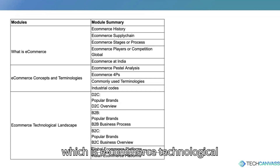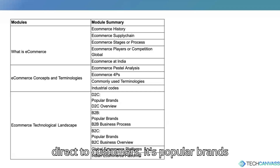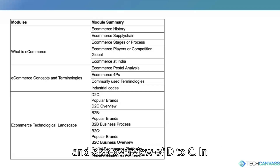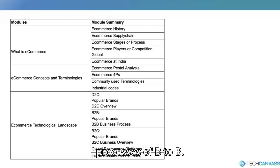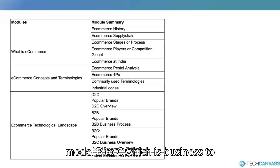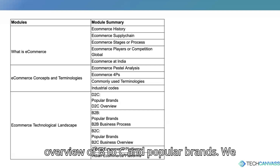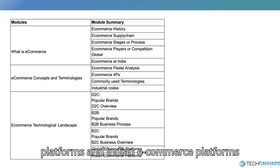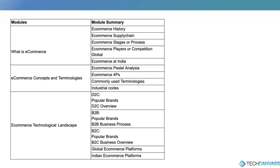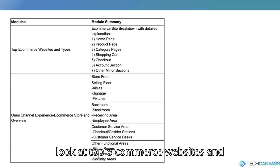The third topic is the e-commerce technological landscape. We will cover D2C (direct to customer) — its popular brands and overview — and B2B (business to business) — its popular brands and business processes. Similarly, B2C (business to customer) will cover business overview and popular brands. We will also cover global and Indian e-commerce platforms, top e-commerce websites, and types.